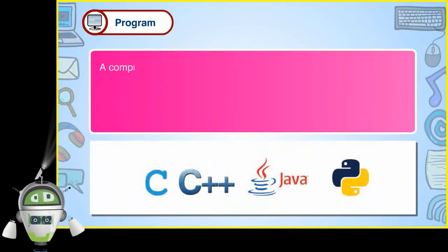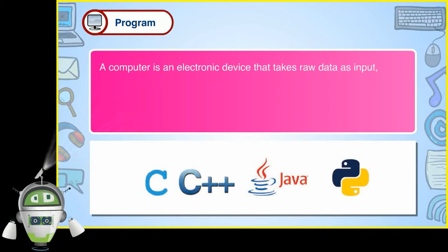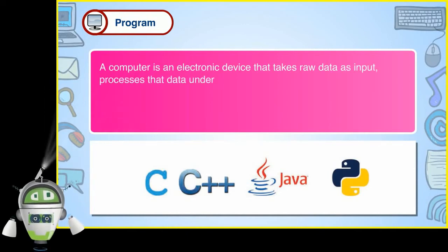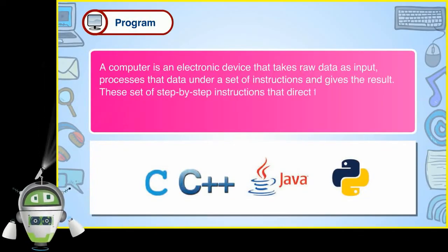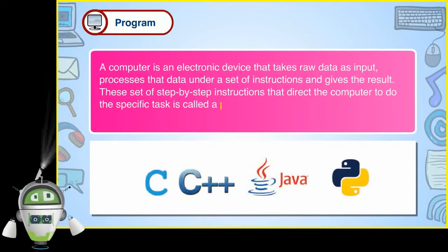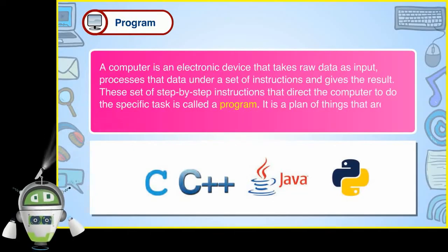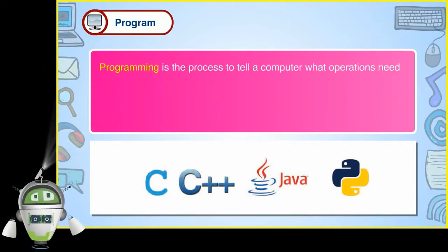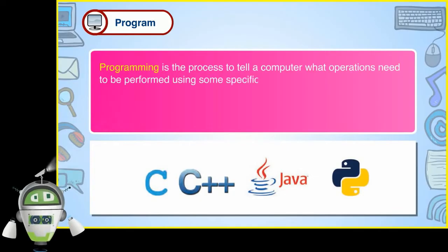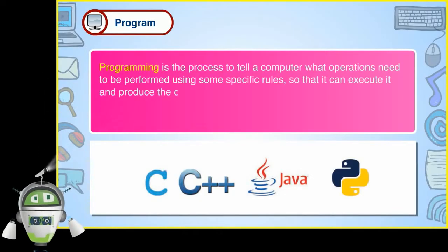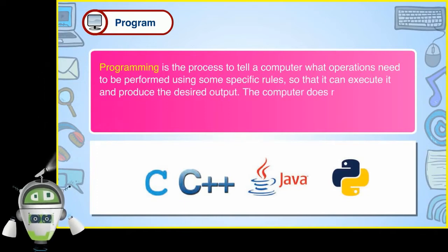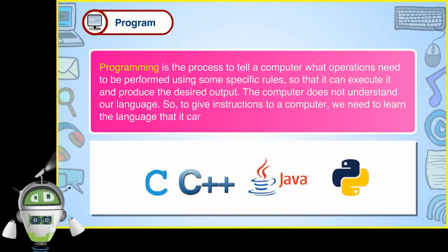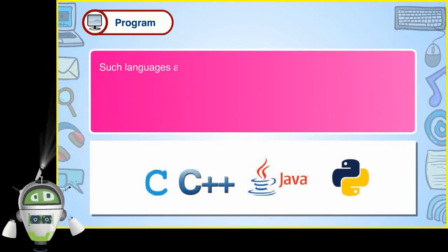A computer is an electronic device that takes raw data as input, processes that data under a set of instructions and gives the result. These set of step-by-step instructions that direct the computer to a specific task is called a program. It is a plan of things done in order to achieve a specific result. Programming is the process to tell a computer what operations need to be performed using specific rules so that it can execute them and produce the desired output. The computer does not understand our language, so to give instructions to a computer, we need to learn the language that it can understand.